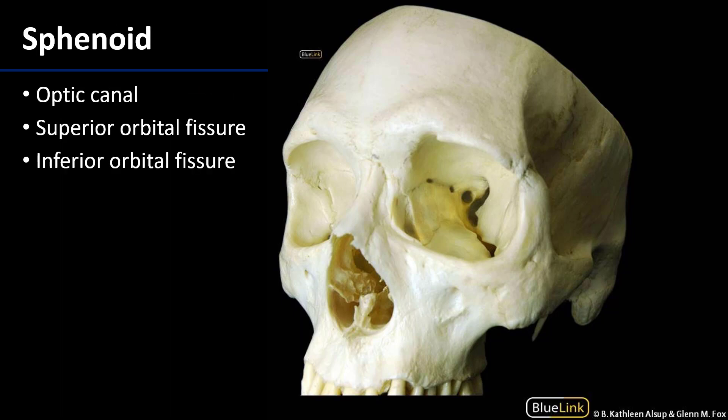Turning our attention to the contralateral side of the skull, we have a very good view of the sphenoid bone here. The sphenoid bone is going to include the optic canal. That optic canal is going to be a passageway for cranial nerve 2, the optic nerve, as well as the ophthalmic artery.